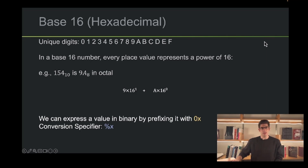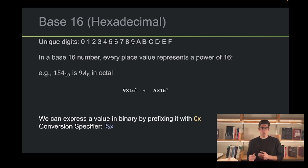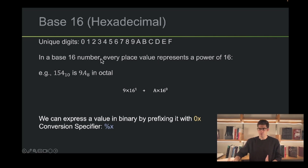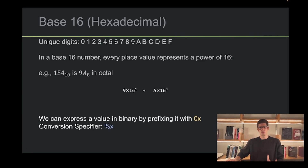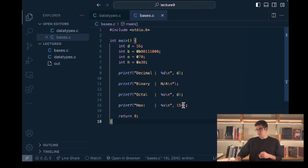Lastly, we're going to look at base 16, or hexadecimal. Hexadecimal has 16 unique digits, going from 0 to F, with F standing for 15. In each base 16 number, every place corresponds to a power of 16. We can express a value in hexadecimal by prefixing it with 0x, and to print a value as hexadecimal we use the %x conversion specifier. In this code, I'm expressing 56 in hexadecimal as 0x38, and printing 56 as hexadecimal with the %x conversion specifier.